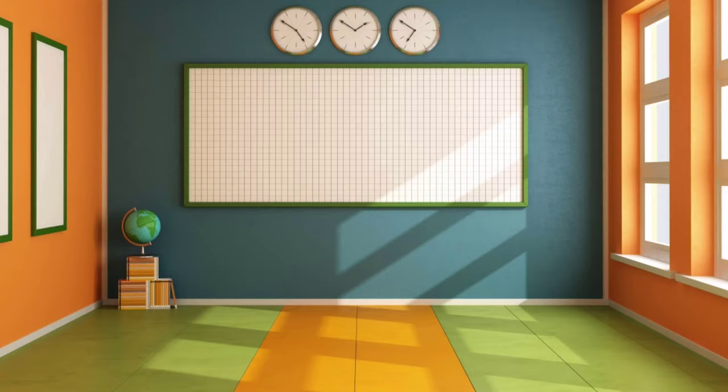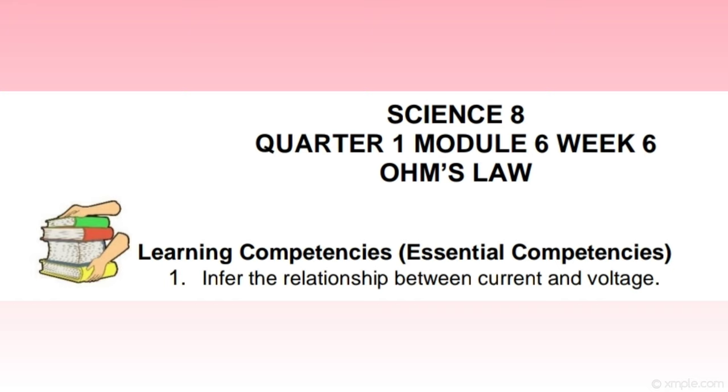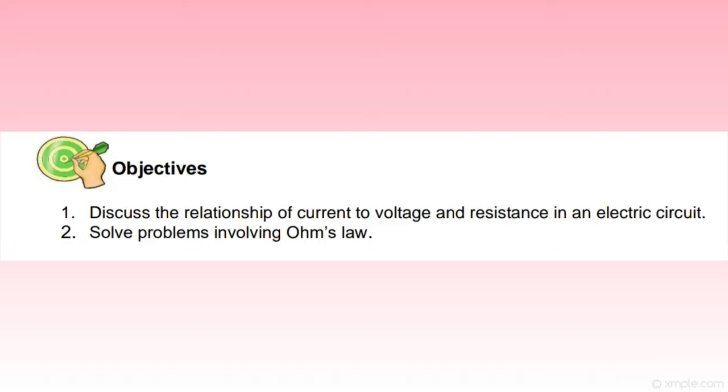For today's particular module, the learning competency is: infer the relationship between current and voltage. Day one talks about the current, voltage, and resistance relationship. Here are the objectives: first, discuss the relationship of current to voltage and resistance in an electric circuit; second, solve problems involving Ohm's Law.